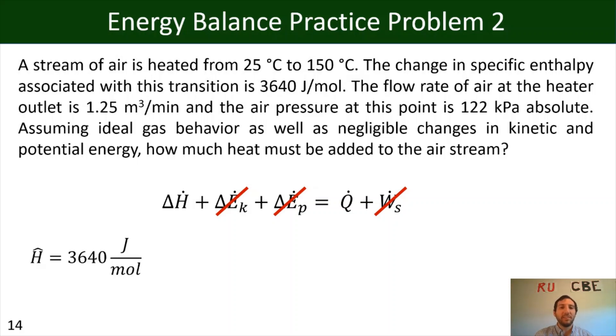So we know that we have a specific enthalpy of 3,640 joules per mole. We know that our initial temperature is 25 degrees Celsius. Our final temperature is 150 degrees Celsius, and we also know that we have a volumetric flow rate of 1.25 meters cubed per minute, and we know that we have a pressure of 122 kPa. Now, for the volumetric flow rate and the pressure, something to pay attention to is that those two pieces, the flow rate of the air at the heater outlet is 1.25 meters cubed per minute, and the air pressure at this point is 122 kPa, absolute. So just be mindful that the volumetric flow rate and the pressure are for the outlet region, not for the inlet. All right, and I'm mentioning that because that may come into play on the next slide.